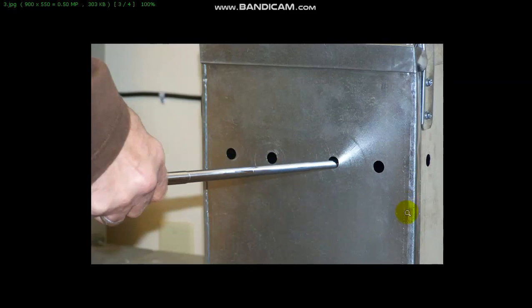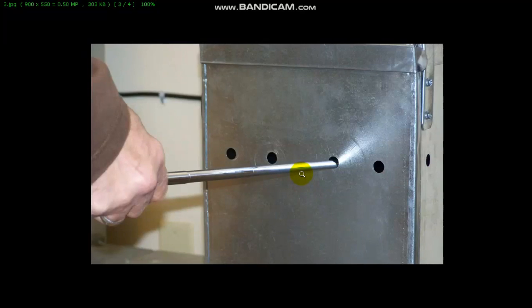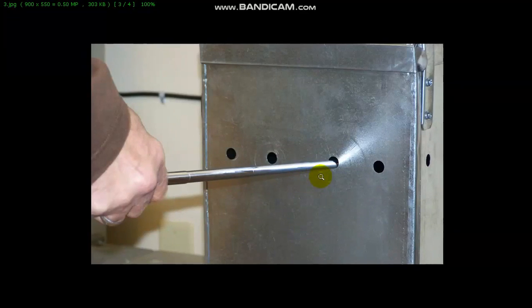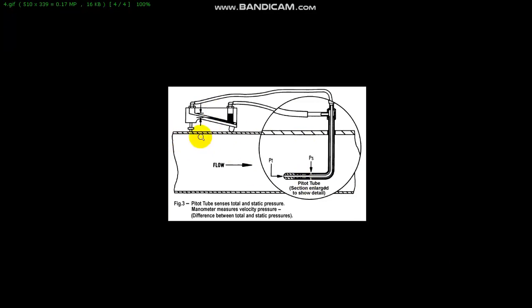As you can see, we have this duct, and if we want to perform a traverse on this duct we need to make holes to get the flow rate. The instrument we are going to use to perform this traverse is the velocity probe or pitot tube. When you are using the pitot tube it will give you the velocity pressure. The individual velocity pressures must be calculated for each reading and then averaged together to determine the average velocity pressure, which is then converted into velocity in feet per minute.